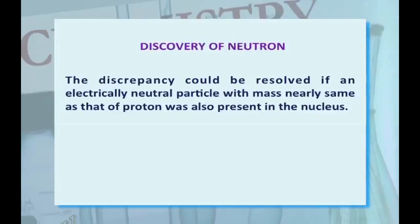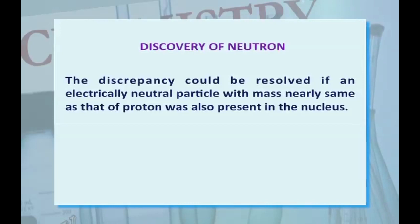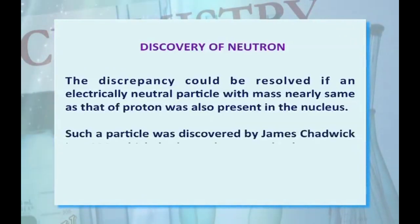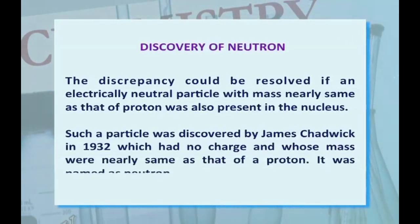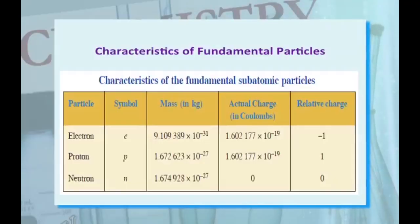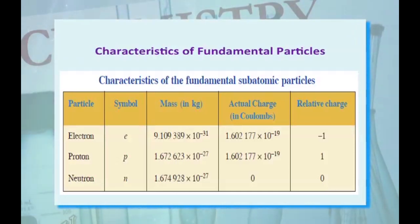Discovery of Neutron: The discrepancies could be resolved if an electrically neutral particle with mass nearly the same as that of a proton existed. Such a particle was discovered by James Chadwick in 1932, which had no charge and whose mass was nearly the same as that of a proton. It was named the neutron. The characteristics of fundamental particles are summarized in a table showing electrons, protons, and neutrons — their symbols, mass, charge, and actual charge in Coulombs.